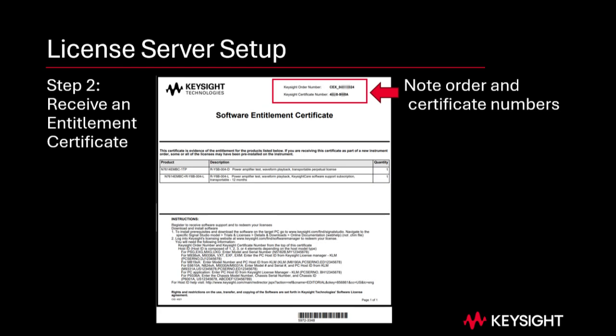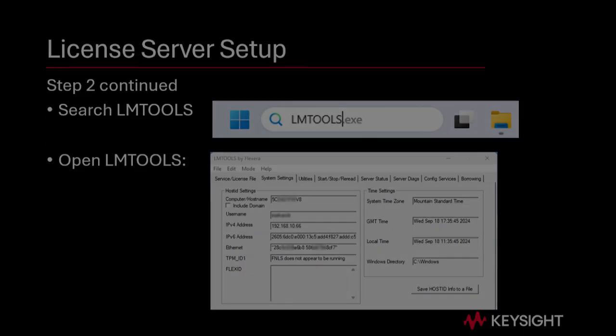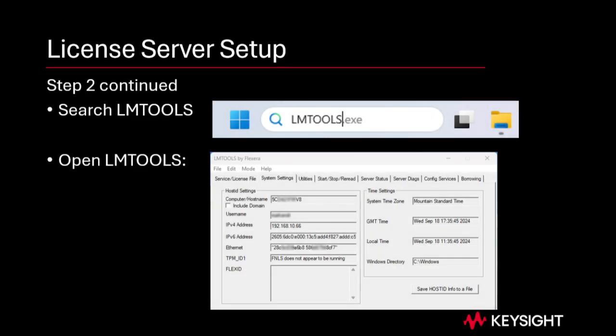Step two: receive a license file. If you have ordered a licensed Keysight product, you'll receive — typically by email — an entitlement certificate. Note the order number and certificate number. To determine the license server's host ID or the dongle ID, use LMTools.